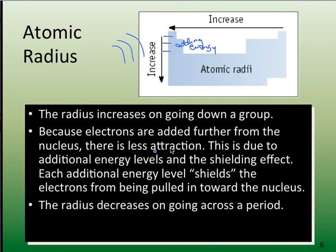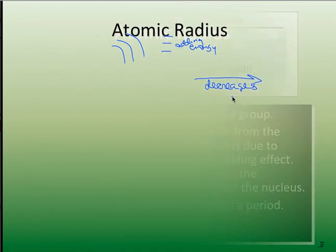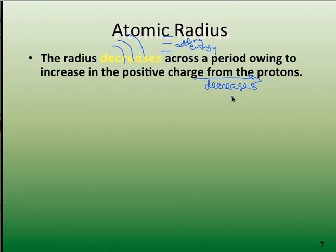As I go across a period, going down it increases, going across the radius actually decreases. My Z-effective is actually getting larger. My inner core number of electrons doesn't change because I'm in the same highest energy group. My number of protons is increasing, so my Z-effective, or that attractive force for the electrons by the nucleus, is increasing.